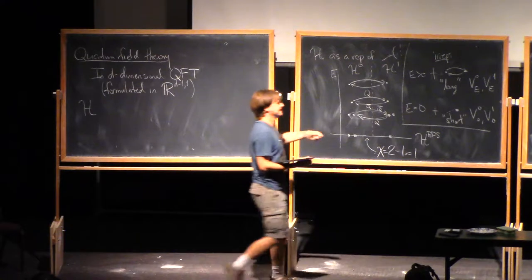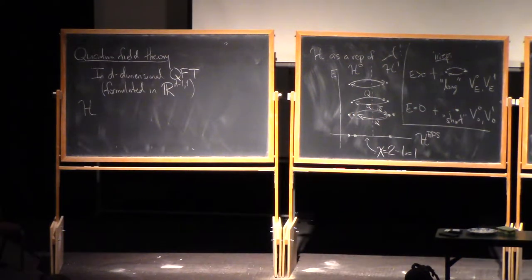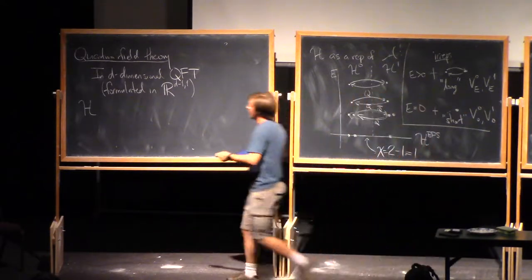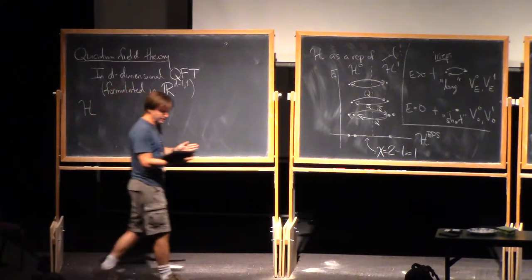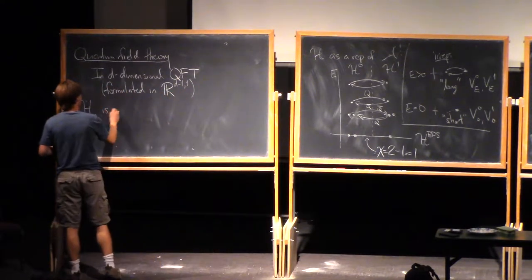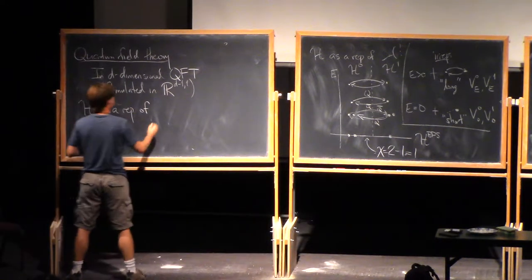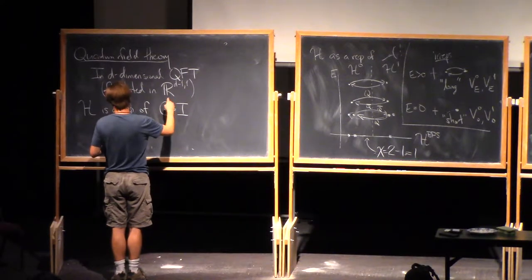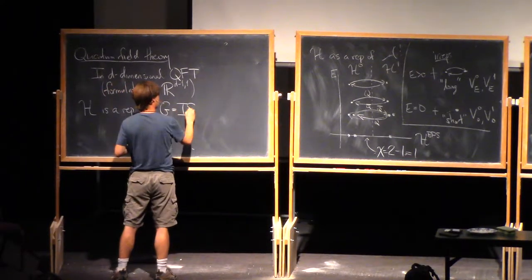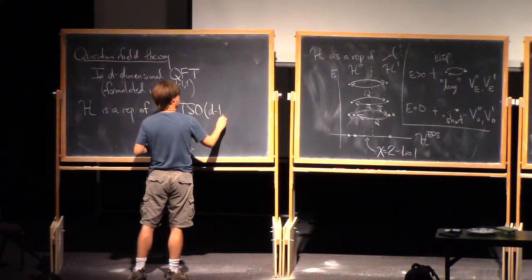Just as before, we get a Hilbert space. In fact, this is actually an example of the structure we had before, so d-dimensional quantum field theory is an example of quantum mechanics, but it has a lot more structure. The Hilbert space comes to us as a representation of the group of isometries of R^{d-1,1}, which is ISO(d-1,1).